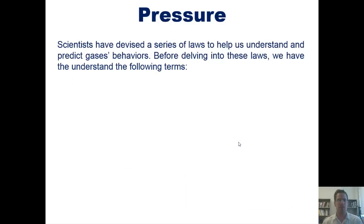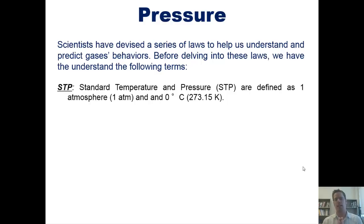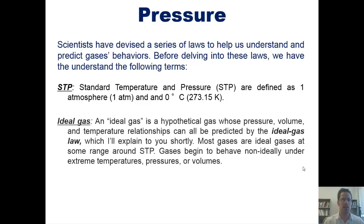Scientists have devised a series of laws to help us understand and predict gases' behaviors. Before delving into these laws, we have to understand the following terms. First, STP. In the world of science, STP does not stand for Stone Temple Pilots. It stands for Standard Temperature and Pressure. And it is defined as one atmosphere and zero degrees Celsius, or 273.15 kelvins. Next, ideal gas. In the world of science, an ideal gas is a hypothetical gas whose pressure, volume, and temperature relationships can all be predicted by the ideal gas law, which I'll explain to you shortly. Most gases are ideal gases at some range at or near or around STP. Gases begin to behave non-ideally under extreme temperatures, pressures, or volumes.